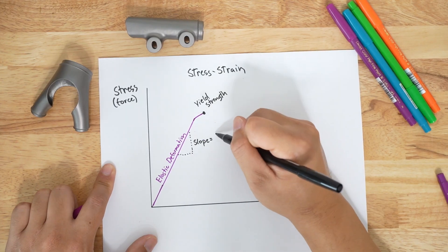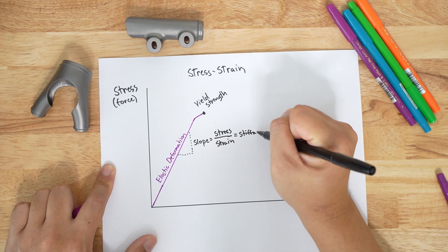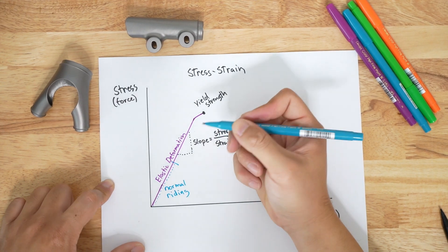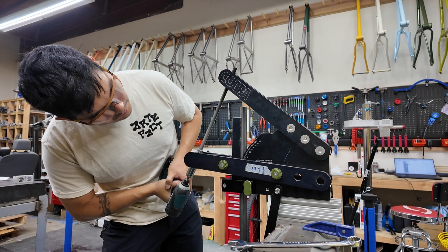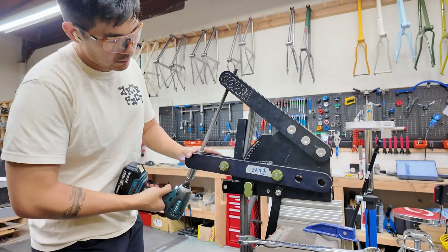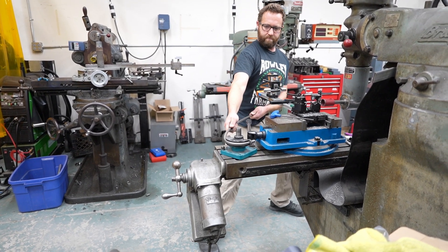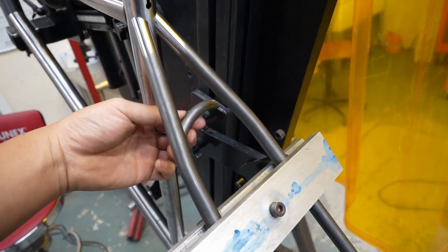The slope of this line, the stress divided by strain, is the stiffness of the material. The elastic region is where all normal riding occurs, far away from the yield strength. If we keep pushing the material past its yield strength, it starts to permanently deform. This is known as plastic deformation. The material no longer bounces back to its original shape.